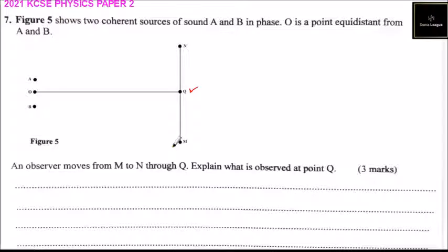When it gets to Q, the observer will experience loud sound, which is, we also call constructive interference, because this is the locus of point equidistance from the two sources, hence the path difference.